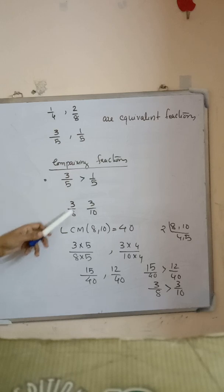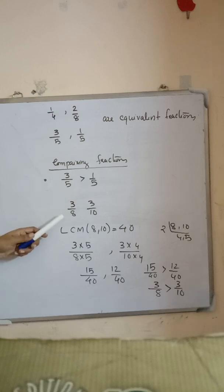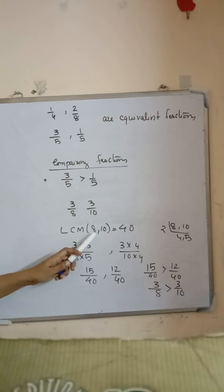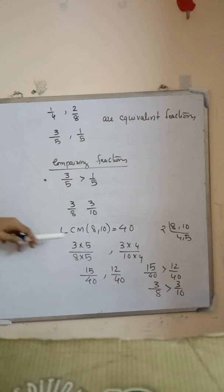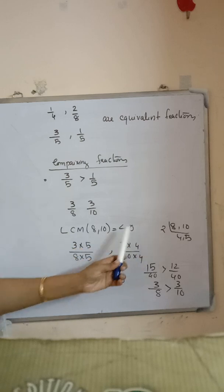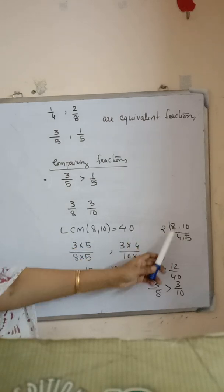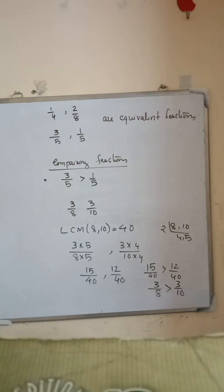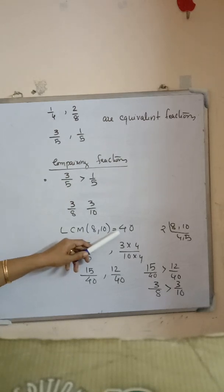How do we compare 3 by 8 and 3 by 10? For that, we take the LCM of the denominators. The LCM of 8 and 10 is 40, since 8 times 5 is 40 and 10 times 4 is 40. We can also find the LCM by dividing 8 and 10 by 2 to get 4 and 5, then 4 times 5 times 2 is 40.